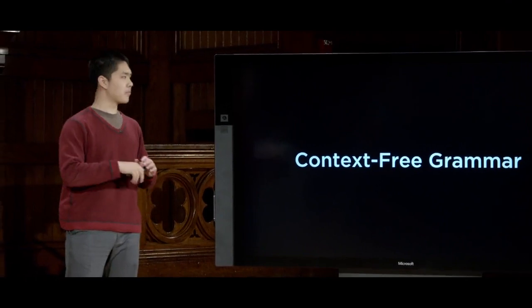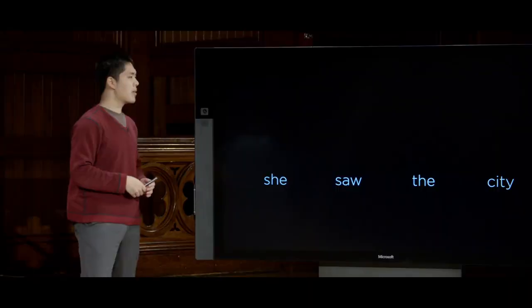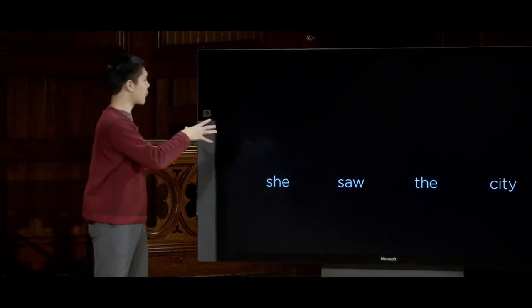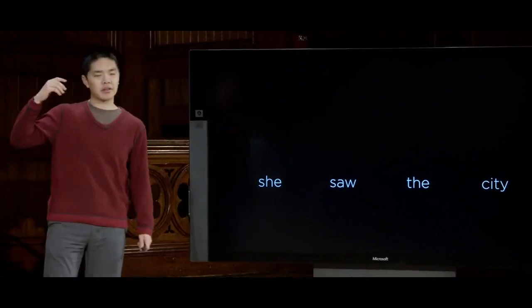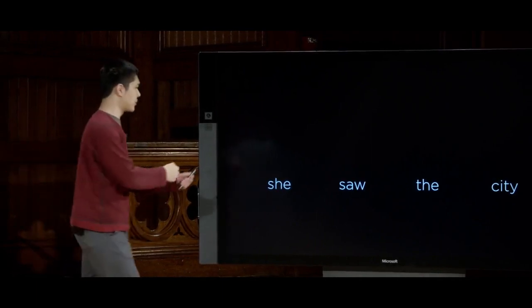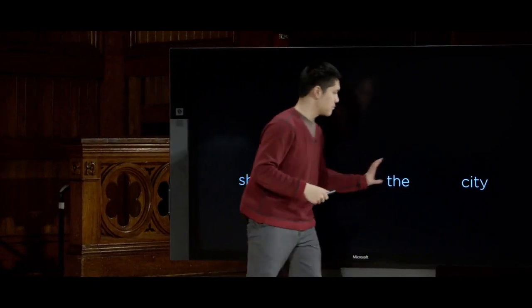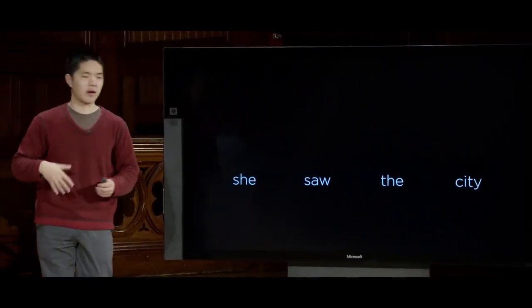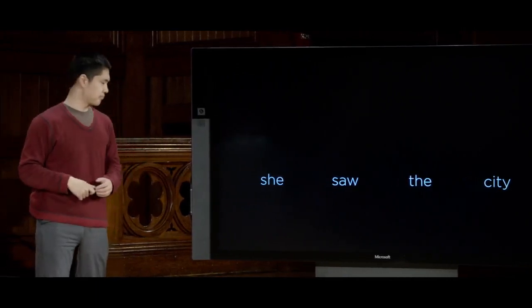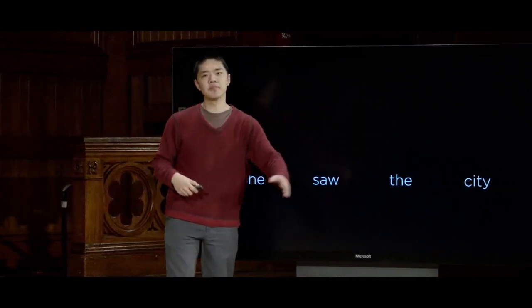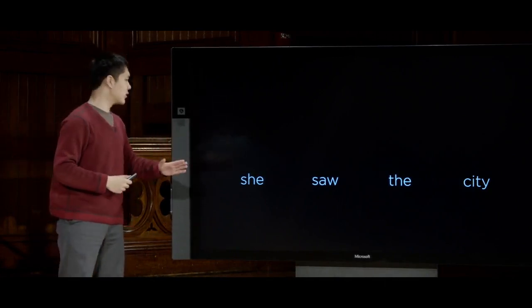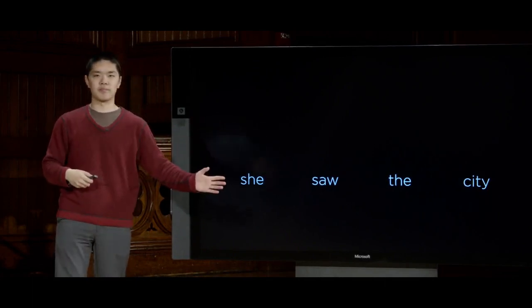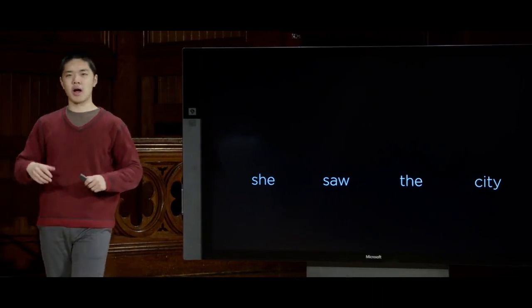Let's imagine a simple English sentence: 'She saw the city.' We'd like our AI to look at the sentence and figure out its structure. If you imagine AI in a question-answering format and you ask 'what did she see?', the AI needs to look at the sentence and recognize that what she saw is the city. Each of these words — she, saw, the, city — we're going to call terminal symbols. Each is associated with a non-terminal symbol: she is a noun N, saw is a verb V, the is a determiner D, and city is also a noun N.